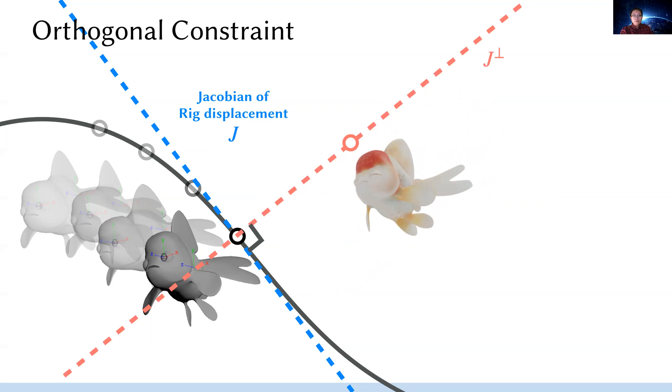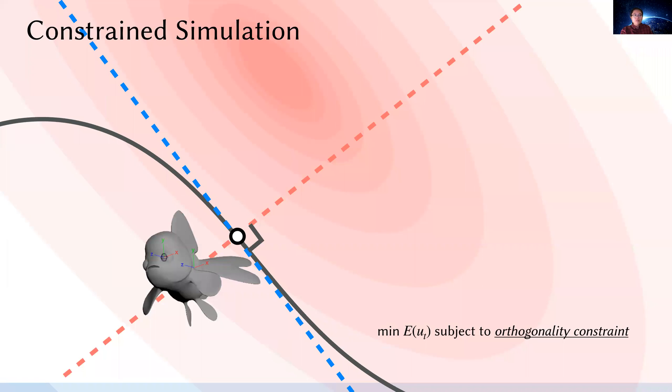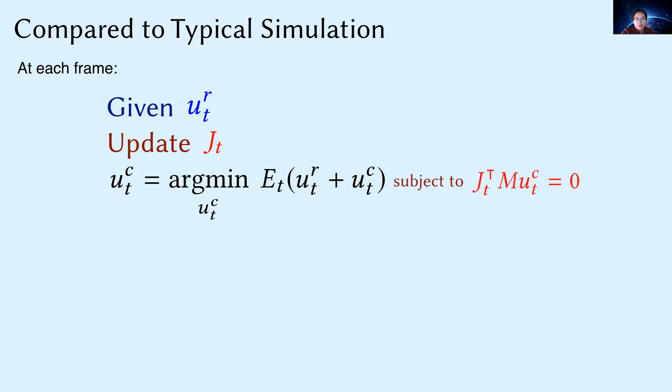That is to say, we are required to compute the Jacobian of rig displacement with respect to the rig control parameters. So instead of solving an unconstrained minimization problem, we optimize the original objective function subject to our orthogonality constraint. If you plot the contour lines of the dynamic objective, we are looking for a local minimum within the feasibility space. Compared to the typical simulation pipeline, at each frame we are given the rig displacement u_R, do this change of variable, and then we update the rig Jacobian correspondingly, solve a constrained minimization problem instead, and finally recover the final displacement, and repeat the process frame by frame. It's just so simple.